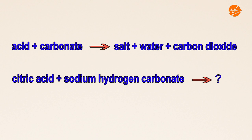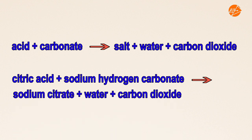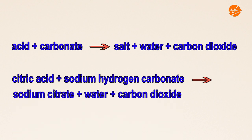Using the reaction of acids with carbonates as an example, what do you think is the word equation for the reaction between citric acid and sodium hydrogen carbonate? Citric acid reacts with sodium hydrogen carbonate to produce sodium citrate, which is a salt, water and carbon dioxide gas.